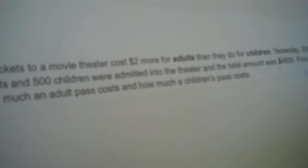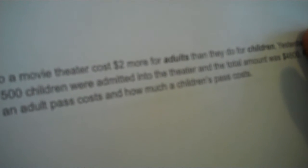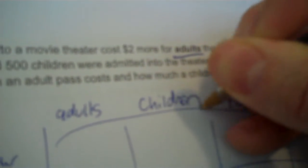Next one, number 4. Tickets to a movie theater cost $2 more for adults than they do for children. Yesterday, 300 adults and 500 children were admitted into the theater and the total amount was $4,600. Find how much an adult pass cost, how much a children's pass cost. So we got adults, children, and dollars. Those are all in bold. So make a table. Together, how many units, per unit, and total. So the independent units are your adults and children. Then money total, money per unit.